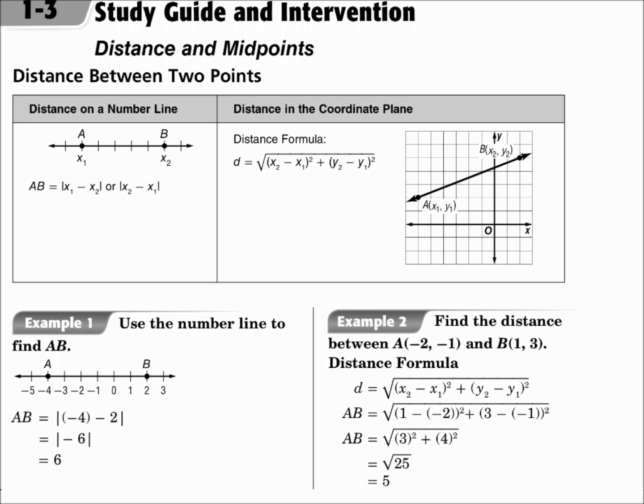To find distance on a number line, you take the values of the two points and subtract them, and then take the absolute value. Always subtract for distance. On the coordinate plane, you use this formula. Notice again the subtraction, the squares, and everything is under the square root.